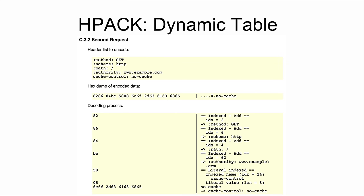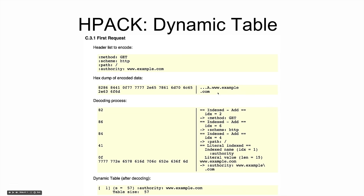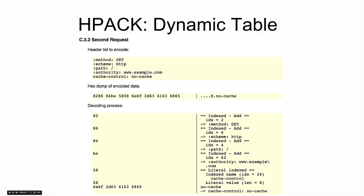You can see www.example.com encoded on the first request, and then on the second request it's gone — you instead just do an indexed add, index 62, and that results in authority www.example.com.